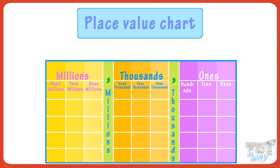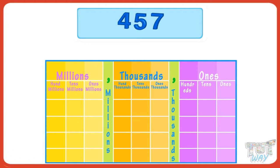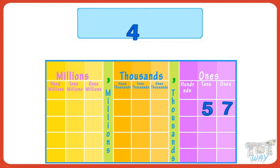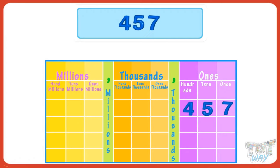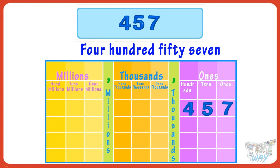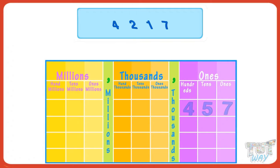Here we have the number 457. Write it in the place value chart starting from the ones digit: seven below the ones place, five below the tens place, four below the hundreds place. The whole number is in the ones period, so no comma is needed.